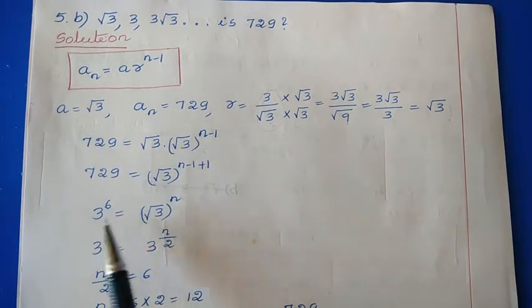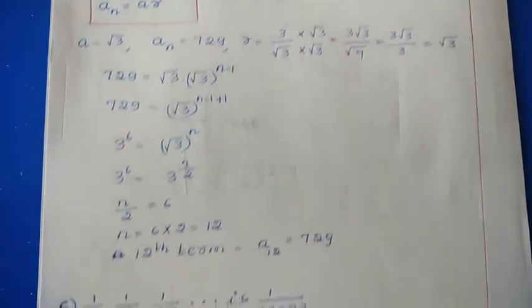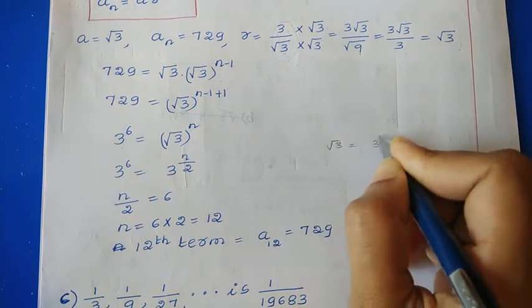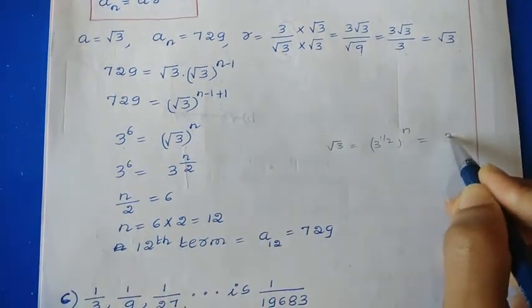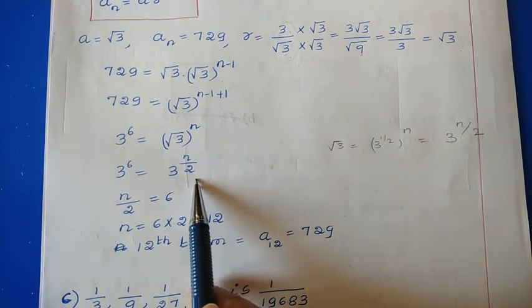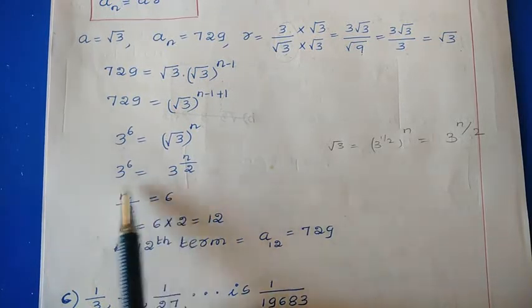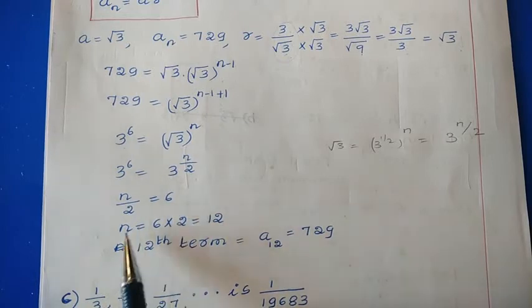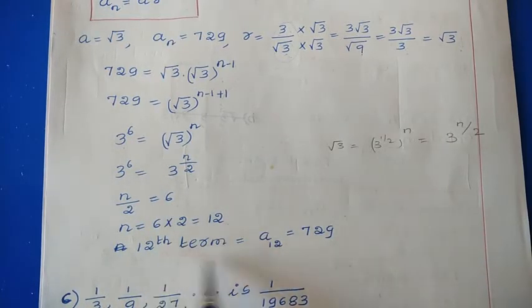Now 729 = 3^6, and √3 = 3^(1/2), so (√3)^n = 3^(n/2). Since the bases are equal: n/2 = 6, so n = 12. Therefore the 12th term of this sequence is 729.